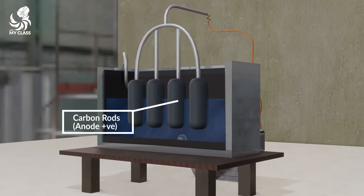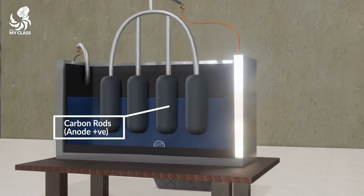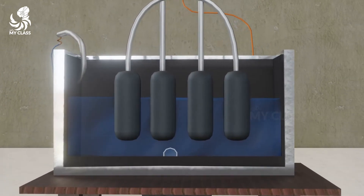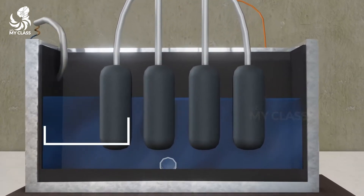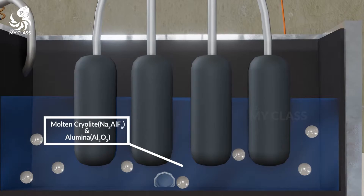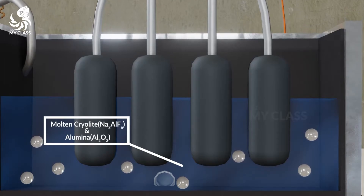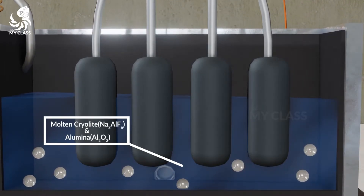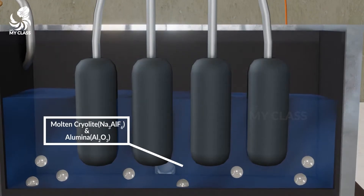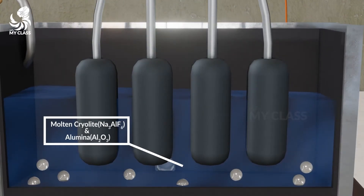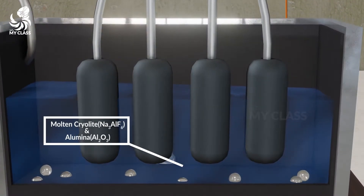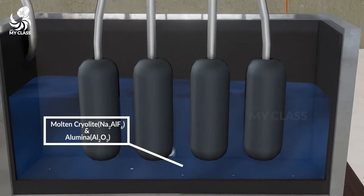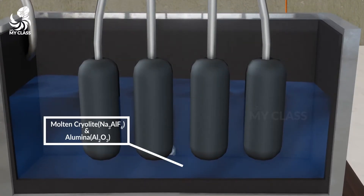It acts as a positive electrode — the anode. It acts as an electrolyte: molten cryolite and aluminium oxide, that is Al₂O₃ and cryolite Na₃AlF₆.